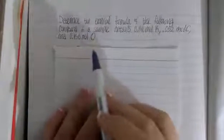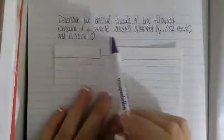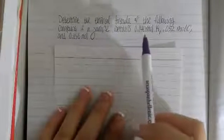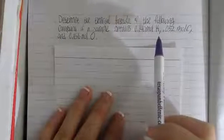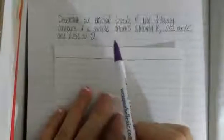In this type of question, we're going to get something like this. Determine the empirical formula of the following compound if a sample contains 0.140 moles of potassium, 0.052 moles of carbon, and 0.156 moles of oxygen.